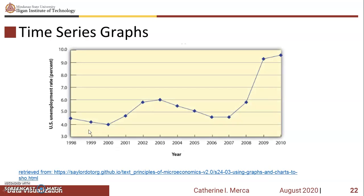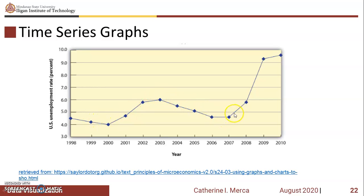Time series graphs. Here is an example about the U.S. unemployment rate, where time is based on years and the data is based on percentage. In 1998, the value is around 4.6%, and you can see how the graph changes over time. A time series graph shows how the value of a particular variable or variables changed over some period of time.